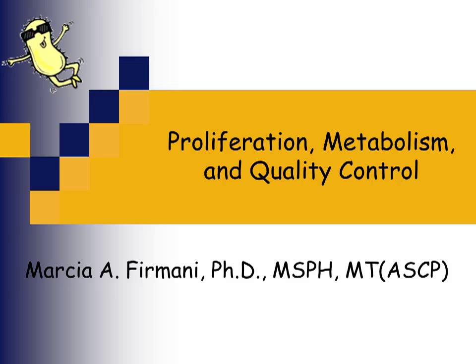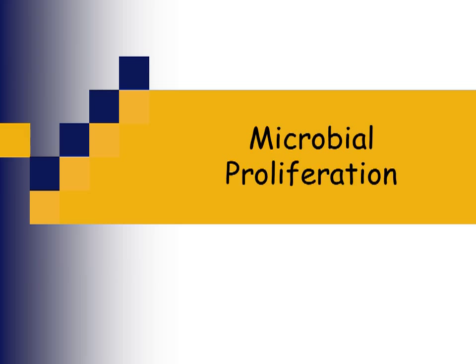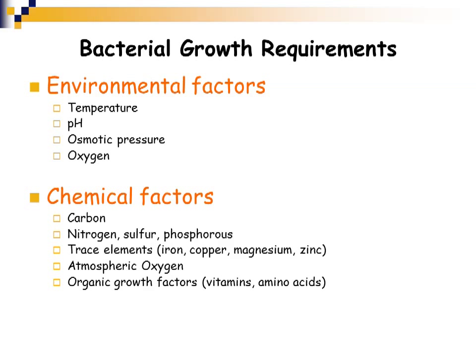This is the second lecture of week one where we're going to focus on bacterial proliferation, metabolism, as well as quality control. We're going to start out by discussing microbial proliferation. Bacteria require certain things in order for them to grow appropriately — specific environmental factors and chemical factors.